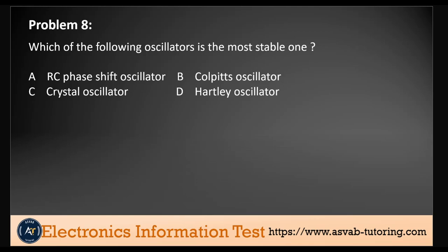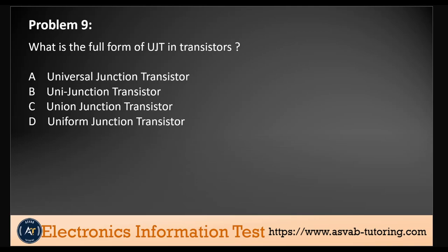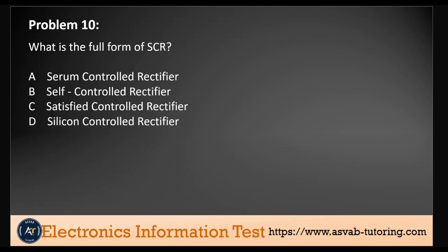Problem eight: Which of the following oscillators is the most stable one? The RC phase shift oscillator, the Colpitts oscillator, the crystal oscillator, or the Hartley oscillator? The most stable one is the crystal oscillator. Problem nine: What is the full form of UJT in transistors? It is the unijunction transistor. And problem ten: What is the full form of SCR? It is silicon controlled rectifier.